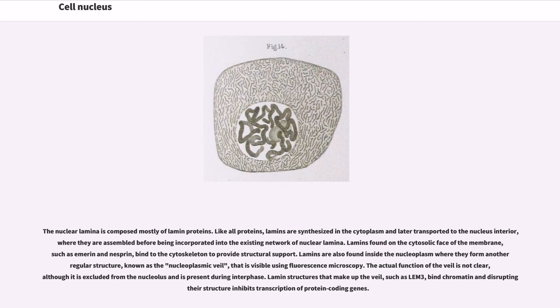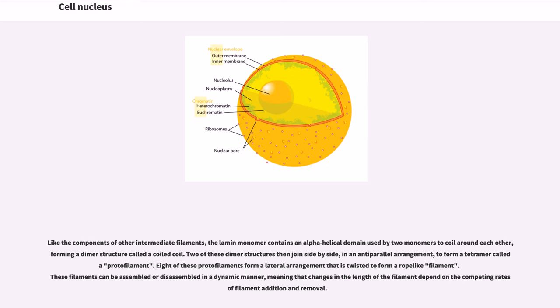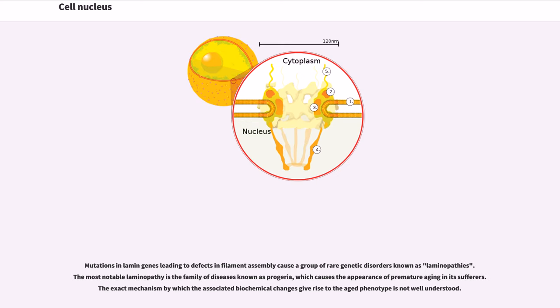Lamin structures that make up the veil, such as LAP2beta, bind chromatin and disrupting their structure inhibits transcription of protein-coding genes. Like the components of other intermediate filaments, the lamin monomer contains an alpha-helical domain used by two monomers to coil around each other, forming a dimer structure called a coiled coil. Two of these dimer structures then join side by side, in an anti-parallel arrangement, to form a tetramer called a protofilament. Eight of these protofilaments form a lateral arrangement that is twisted to form a rope-like filament. These filaments can be assembled or disassembled in a dynamic manner, meaning that changes in the length of the filament depend on the competing rates of filament addition and removal. Mutations in lamin genes leading to defects in filament assembly cause a group of rare genetic disorders known as laminopathies. The most notable laminopathy is the family of diseases known as progeria, which causes the appearance of premature aging in its sufferers. The exact mechanism by which the associated biochemical changes give rise to the aged phenotype is not well understood.